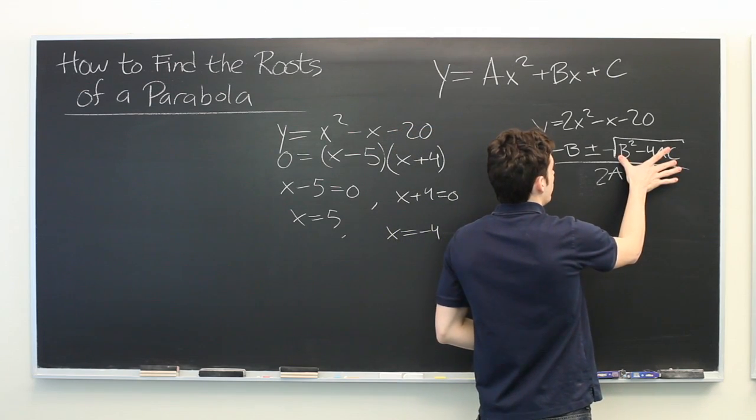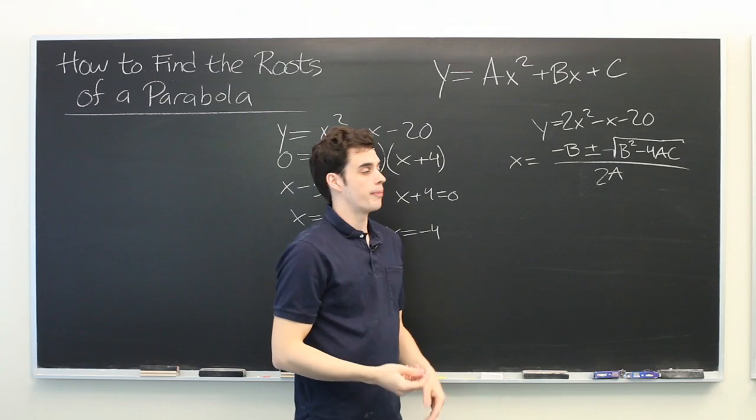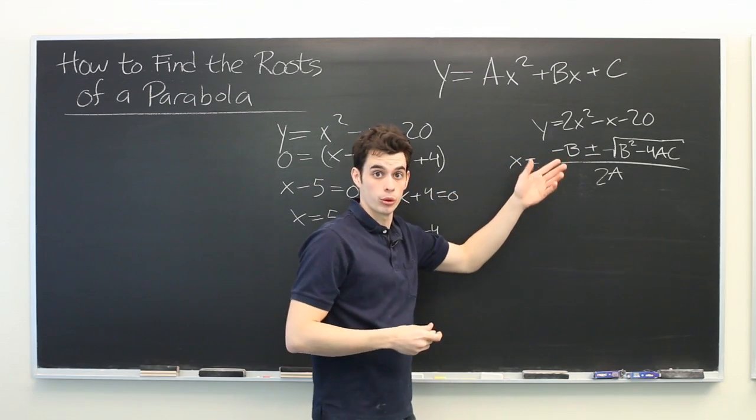But if this is a negative number, you won't get any real roots. You'll have to use what are known as complex numbers. For now, we're going to use an example that gives real roots.